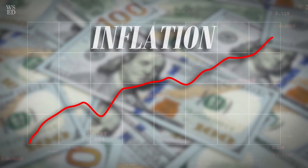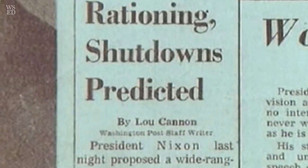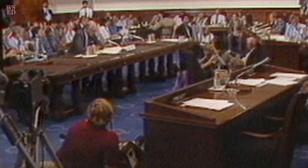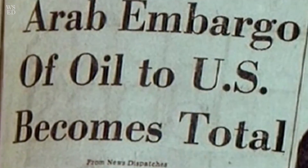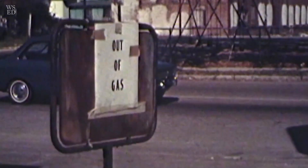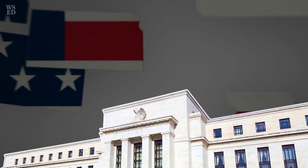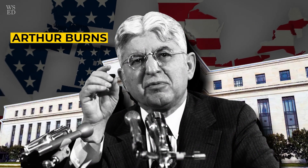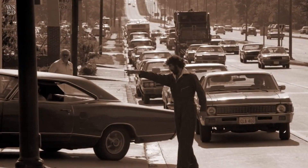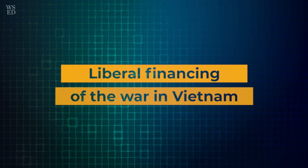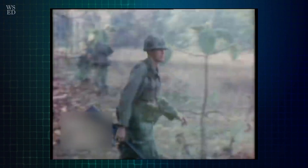Inflation was also not caused solely by high energy prices. In the U.S., commodity prices had been rising at about 10 percent per year since 1970, and inflation had been on the Federal Reserve's radar as something expected. The oil embargo only exacerbated the situation and accelerated inflation. The then-chairman of the Federal Reserve, Arthur Burns, argued in 1979 that this period of high inflation was the result of the confluence of several external forces in addition to the embargo, including liberal financing of the war in Vietnam and currency devaluation.